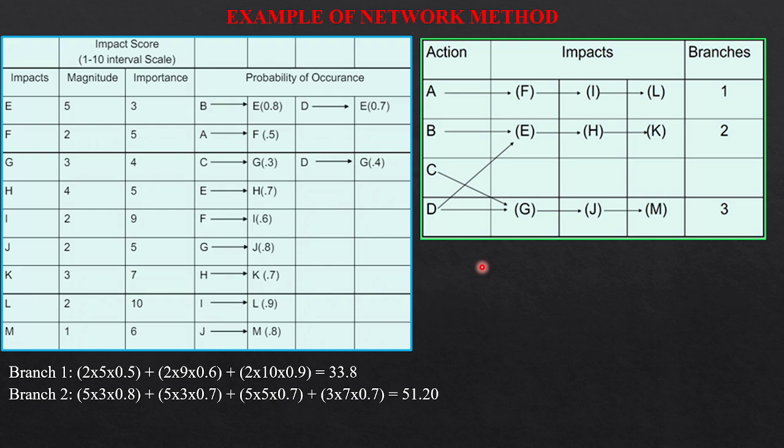For branch 2, we have to see this is E. The value of E, the magnitude is 5 and importance is 3. So I multiply 5 into 3. E due to B is 0.8. So I multiply by 0.8. Again, this comes from D. So E is 2 into 5 into 3. And the value of E due to D is 0.7. I multiply it by 0.7.